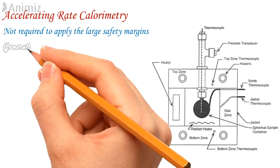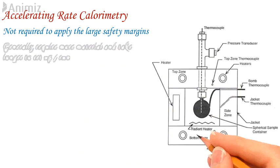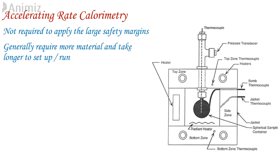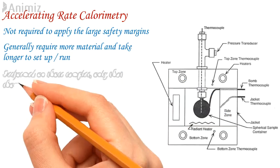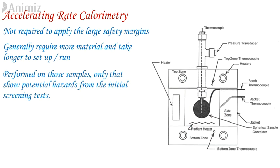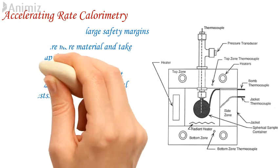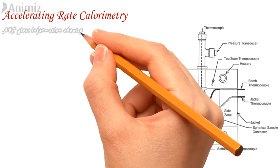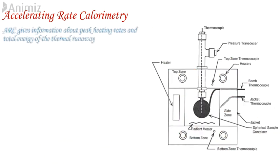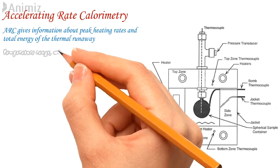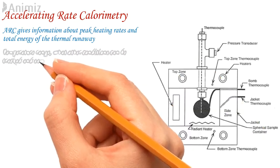Adiabatic calorimeters generally require more material and take a longer time to run. Adiabatic calorimetry is not performed on all samples — only those that show potential hazard from the initial screening test. ARC gives information about peak heating rates and total energy of thermal runaway. Things to consider when purchasing an ARC include temperature range, what other conditions can be tracked, and sample volume.